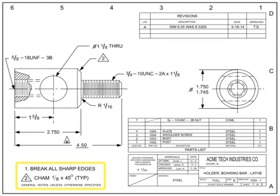The notes list conveys information that the callouts within the field of the drawing do not. It may include general notes, flag notes, or a mixture of both. Traditional locations for the notes list are anywhere along the edges of the field of the drawing, but most are typically found in the upper left or bottom left corners. General notes apply to the entire drawing — tolerances, general handling or material specs, color specifications, testing requirements, or packaging instructions are examples of general notes.